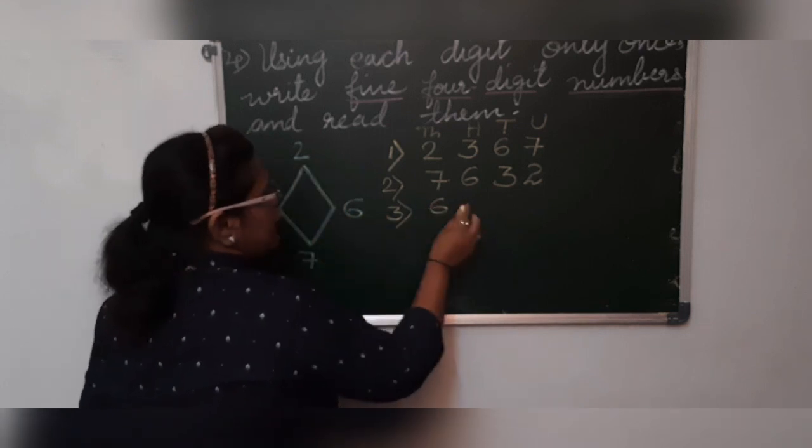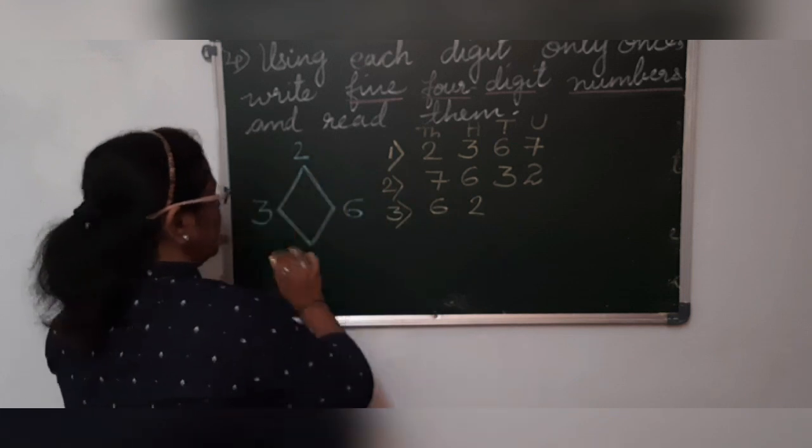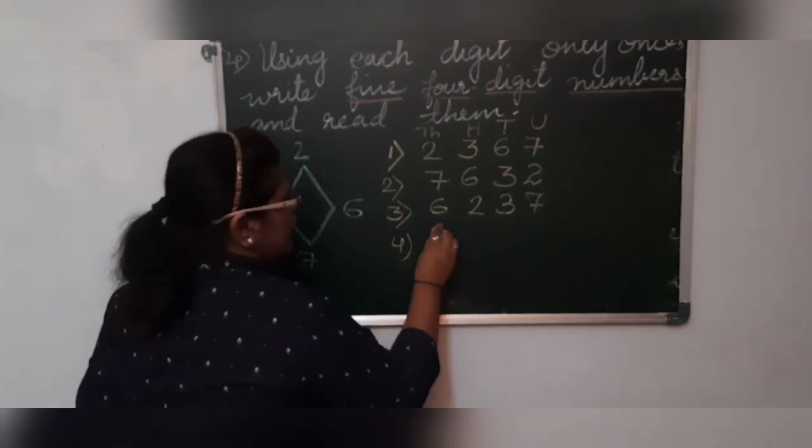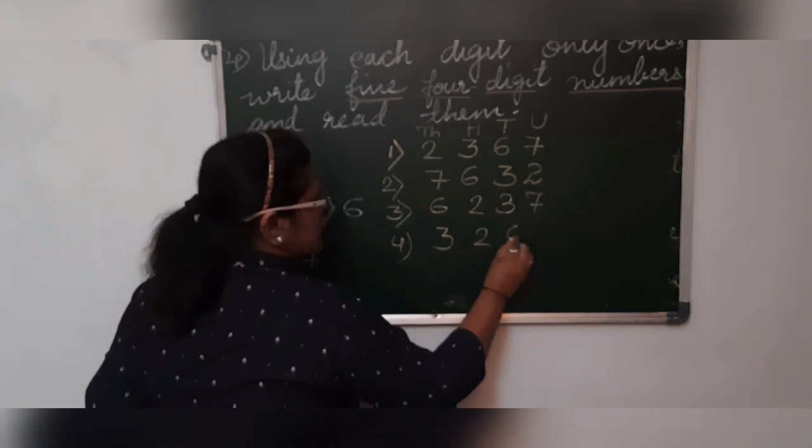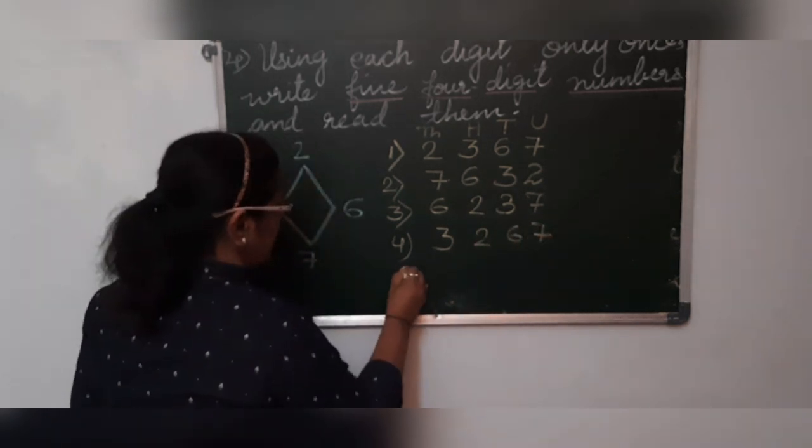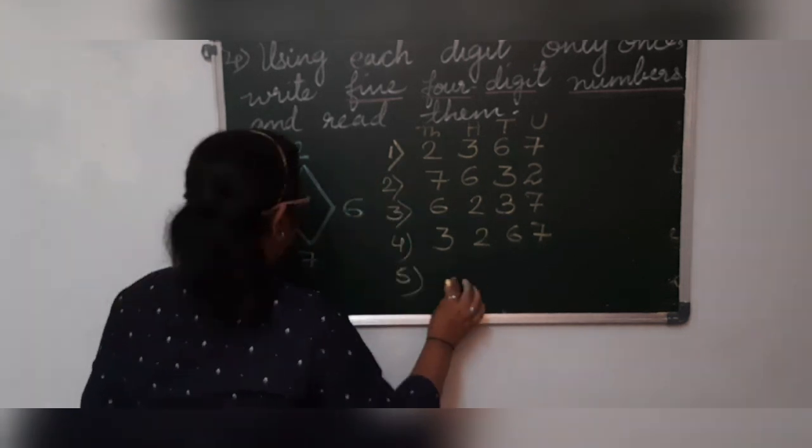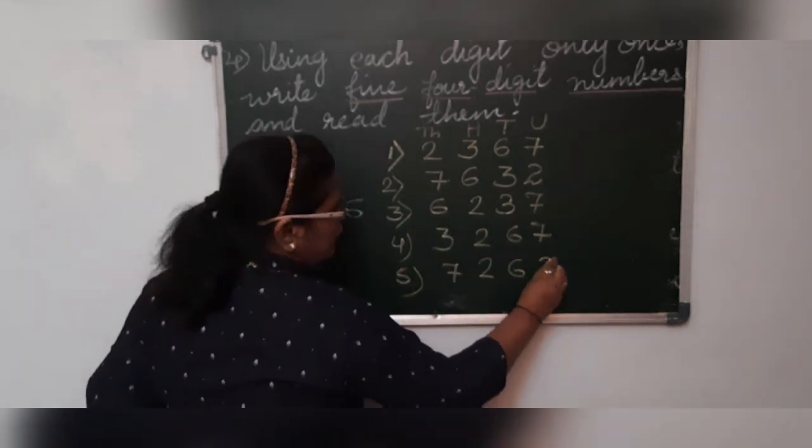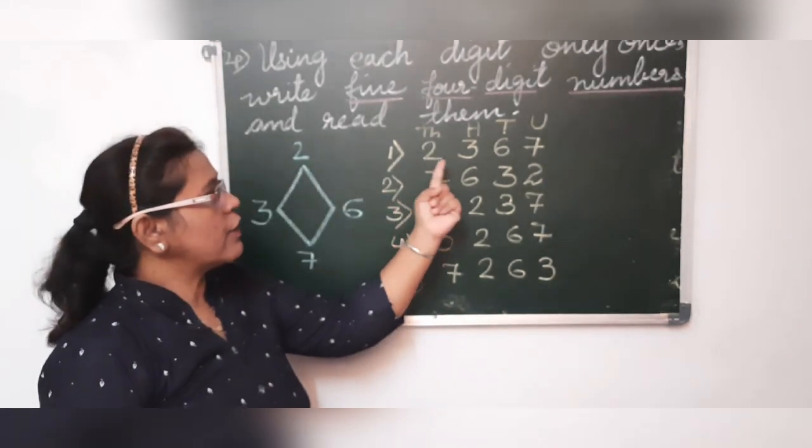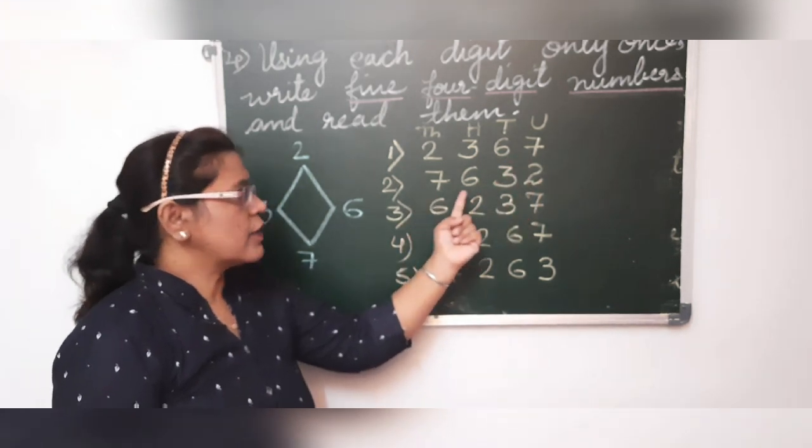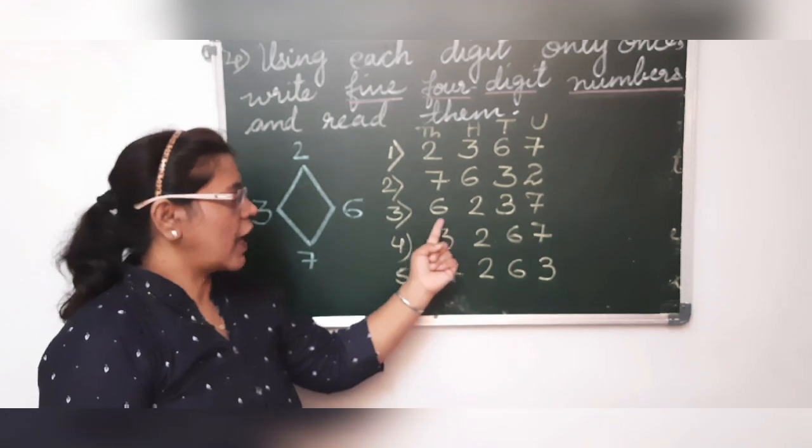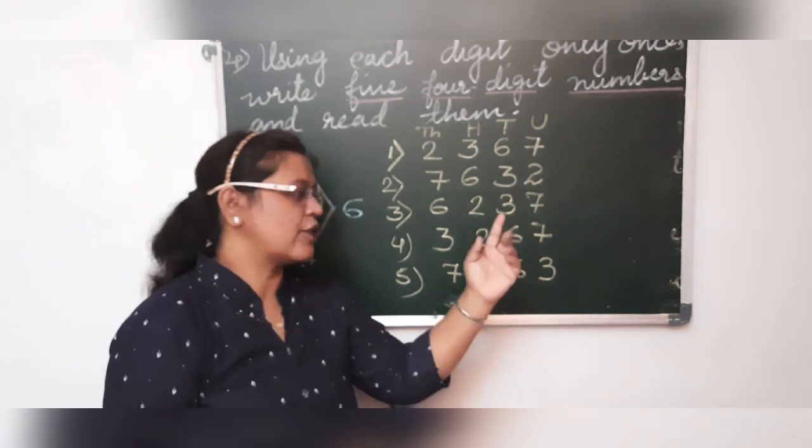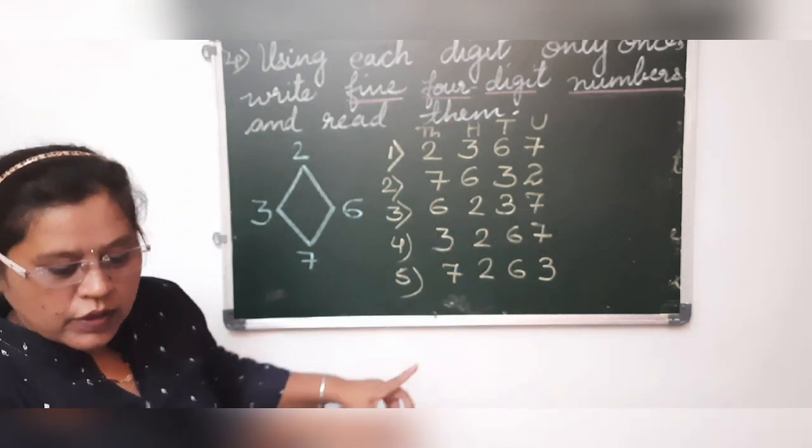Then third number, we use 6. It is 6,237. Then we use 3. It is 3,267. Then fifth one, we can make some jumbling numbers. We will make it 7,263. So once we read the numbers. It is 2,367, 7,632, then 6,237, then 3,267, and 7,263. My dear friends, so we completed the fourth sum.